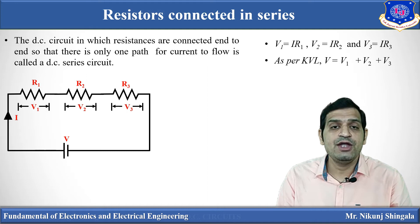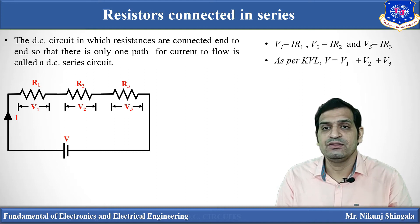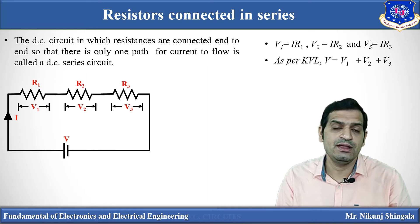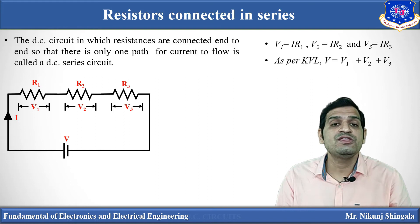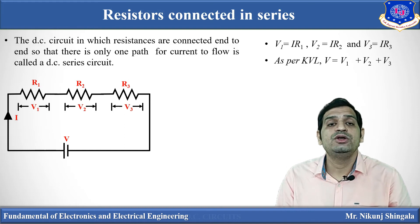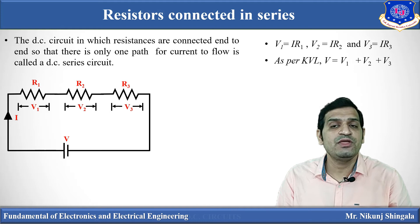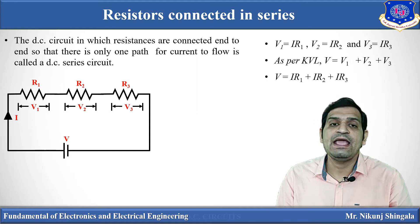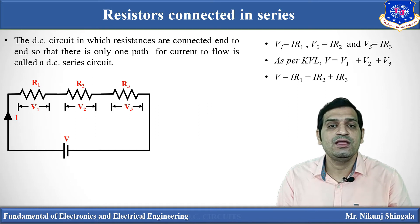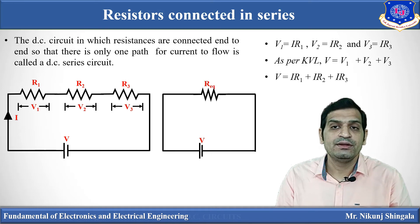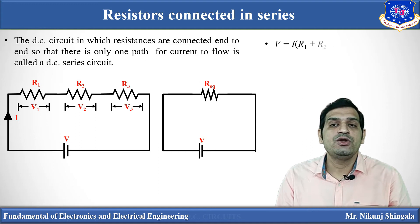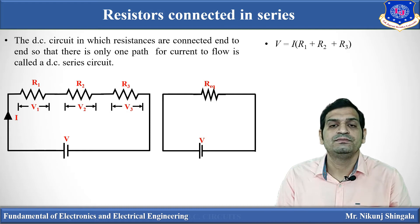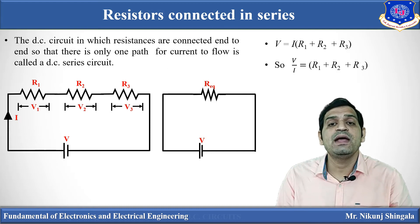We can write V1 equals IR1, V2 equals IR2, and V3 equals IR3. Now, as per KVL, V equals V1 plus V2 plus V3. So we can write V equals IR1 plus IR2 plus IR3. Taking I common: V equals I times (R1 plus R2 plus R3), so V divided by I equals R1 plus R2 plus R3.